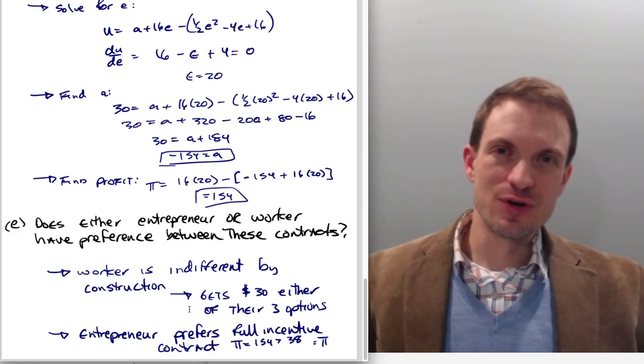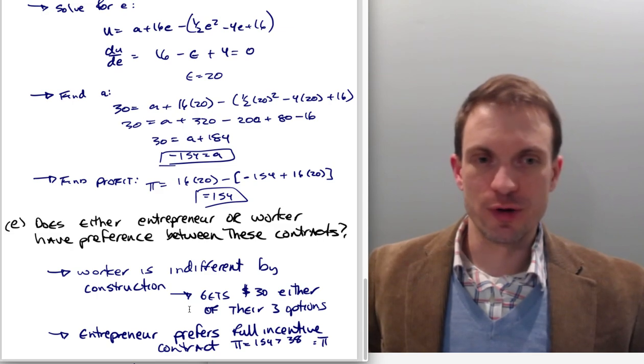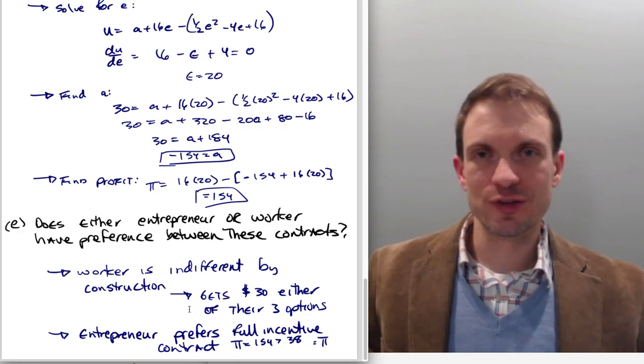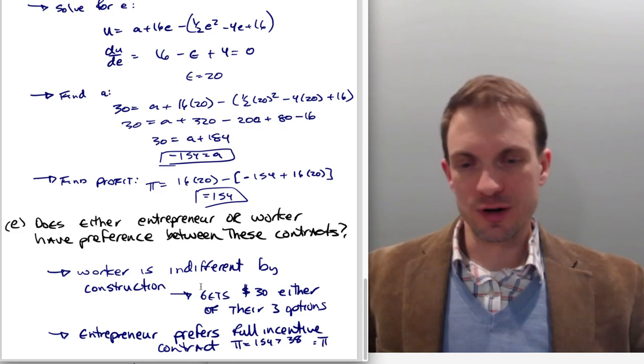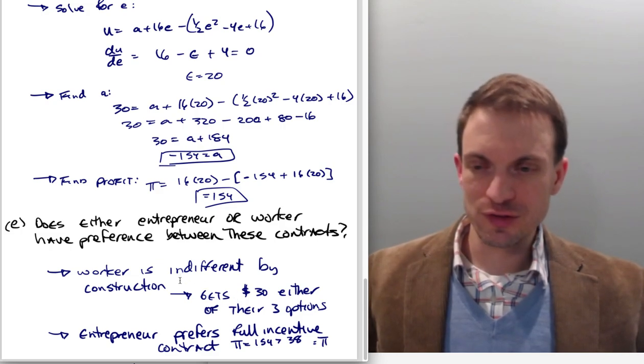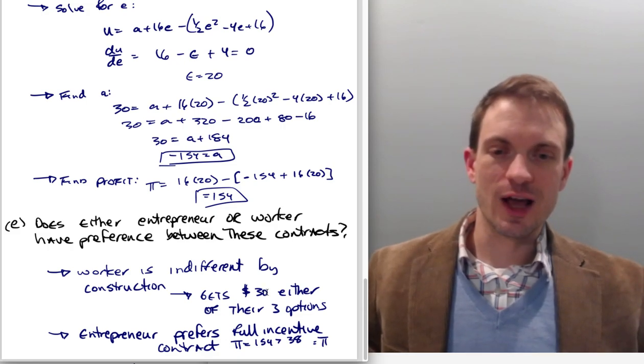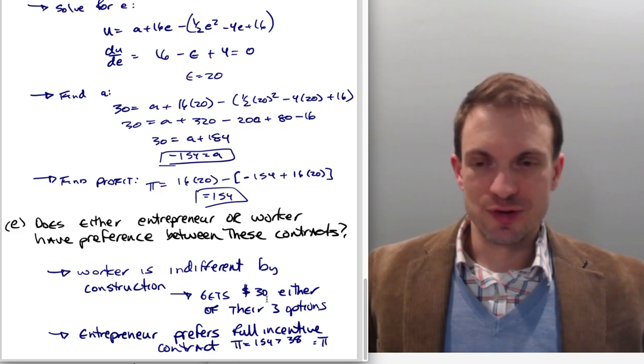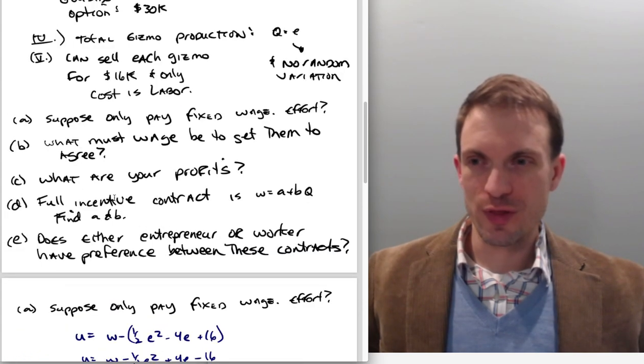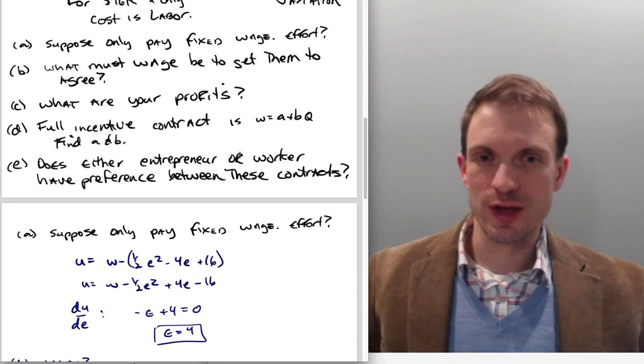Does either the entrepreneur or the worker have a preference between these contracts? Well, clearly the worker's got to be indifferent by construction, otherwise we haven't done a good job. The idea is, at least in this model, is to set the worker exactly indifferent between accepting any of these contracts. And that'll work in a situation where there's no risk involved and we don't have any random variation and these sorts of things. So by construction, the worker's actually going to get $30,000 across either of their three options.